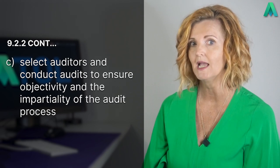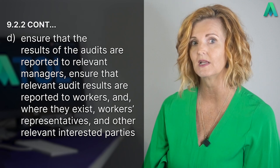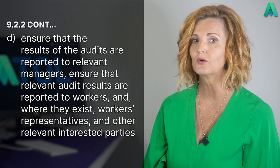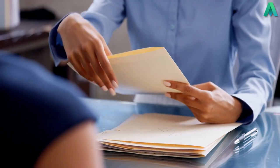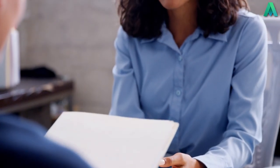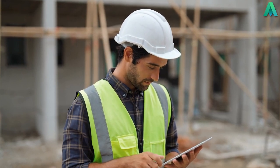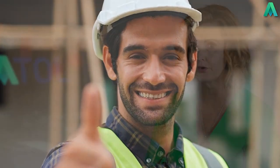Then we have points C and D. Point C: select auditors and conduct audits to ensure objectivity and the impartiality of the audit processes. Point D: ensure that the results of the audits are reported to relevant managers, and ensure that relevant audit results are reported to workers and, where they exist, workers representatives and other relevant interested parties. To summarize these two points: don't audit your own work. If you generate the evidence within the scope of the audit, then you shouldn't be auditing that area. You need to ensure another auditor who is impartial and has no conflict of interest is assigned to that audit in your audit program. And then once you have completed your audit report, ensure that it is provided to relevant management within the business, as well as communicated and shared with workers and any other relevant interested party, which could be customers or suppliers.